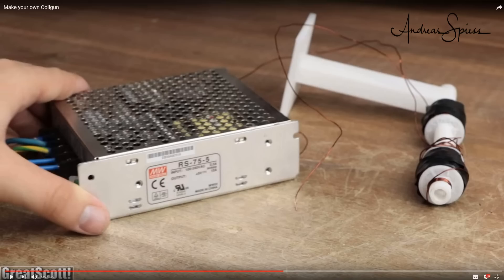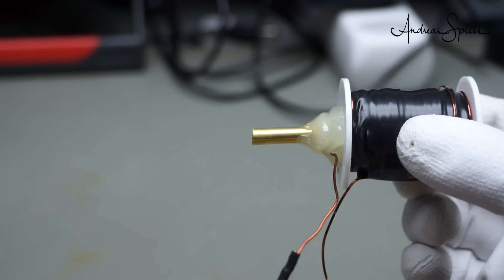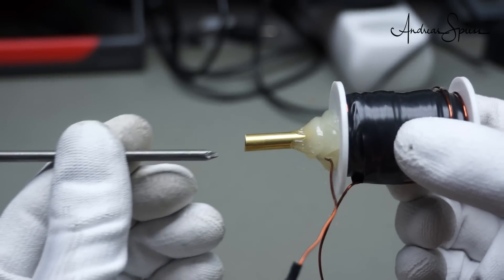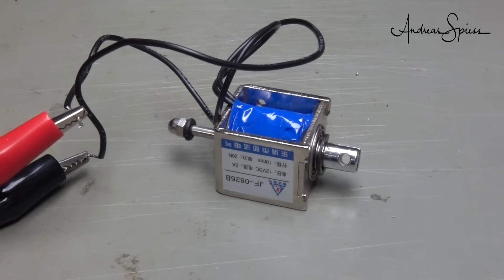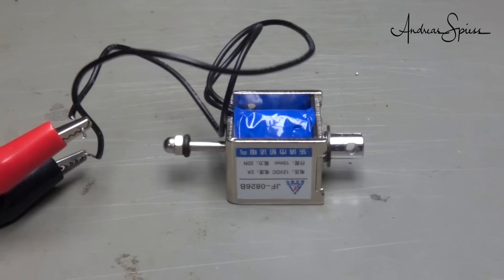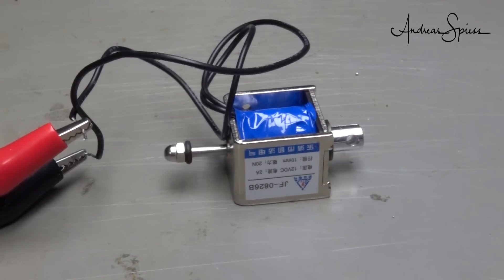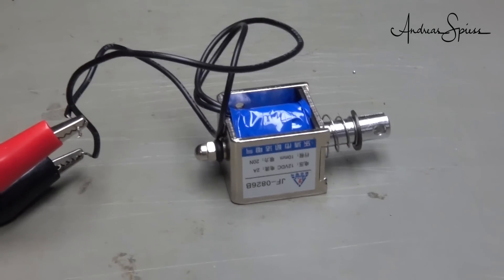For all of you who do not know how such a coil gun works, it consists of a coil and an iron bullet and it works like this solenoid here. If current flows through the coil, a magnetic force pulls the iron towards the middle of the coil. And it stays there as long as the current is applied. If the current stops, the coil force fades away and the iron is moved back by the spring. Not exactly a gun.